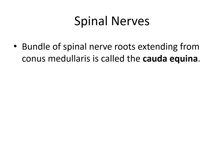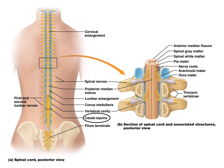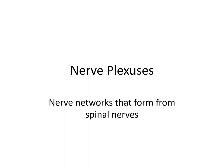The bundle of spinal nerve roots extending from the conus medullaris is called the cauda equina, before it extends to the filum terminale.